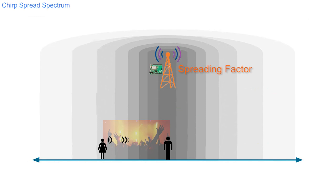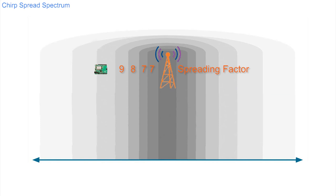As the distance increases, the signal is sent with the spreading factor stepping from 7 nearby to 12 at a distance.